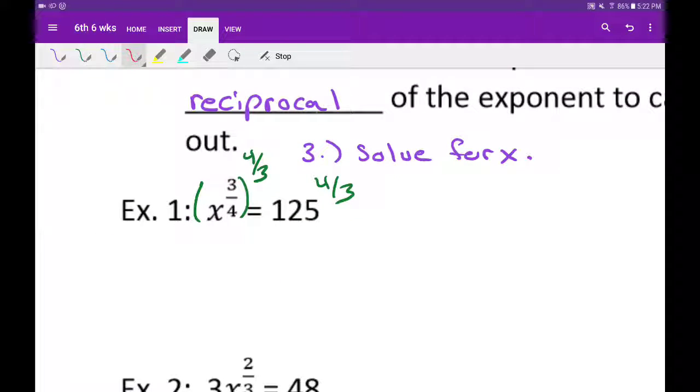So when we do all that, these things are going to end up canceling out. 4s will cancel out, 3s will cancel out, and then that will leave us with just an x. Then in our calculators, we can use 125 to the 4 thirds power, and that's going to give us 625.